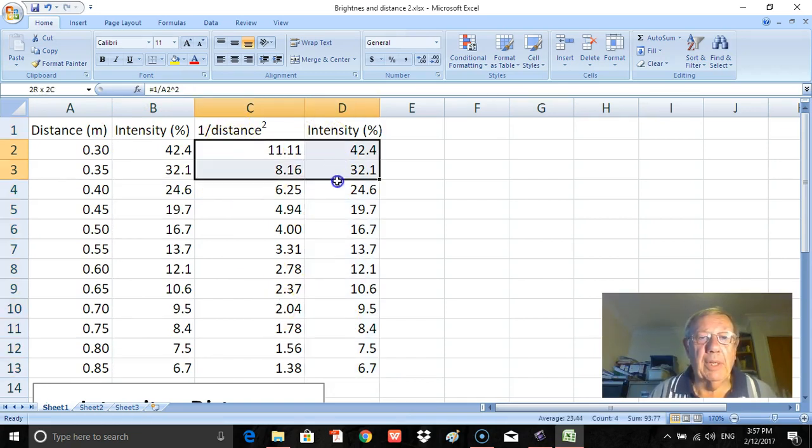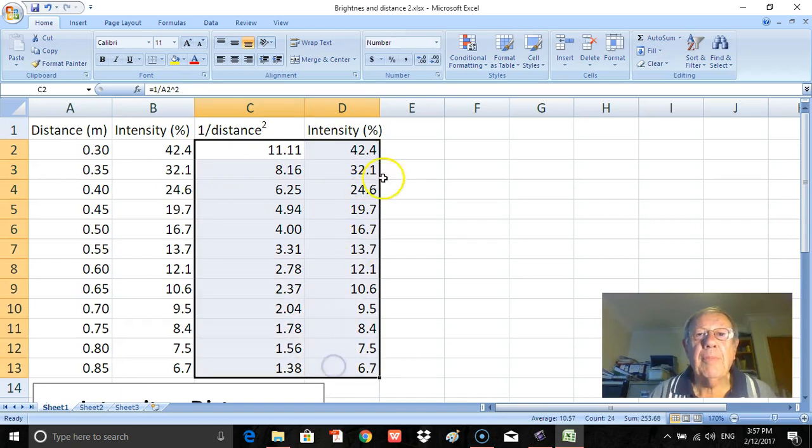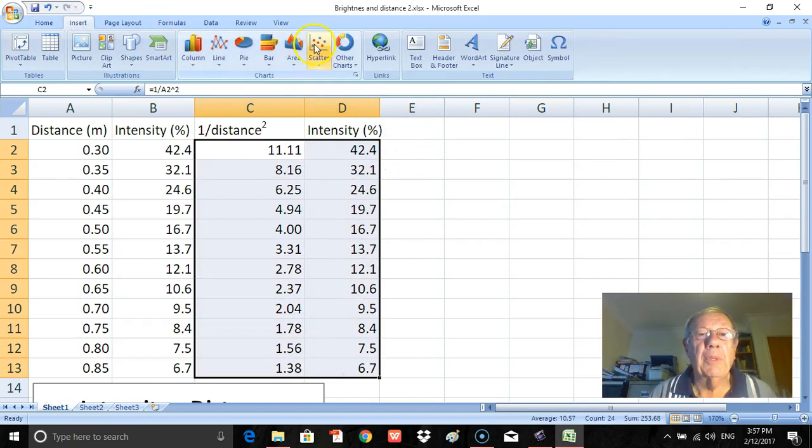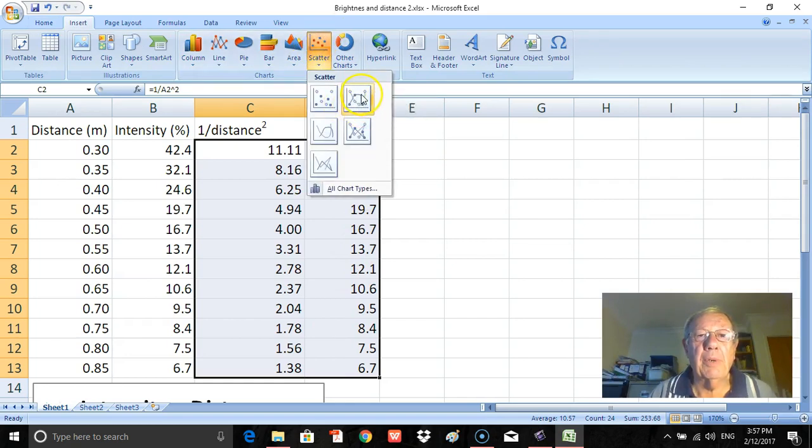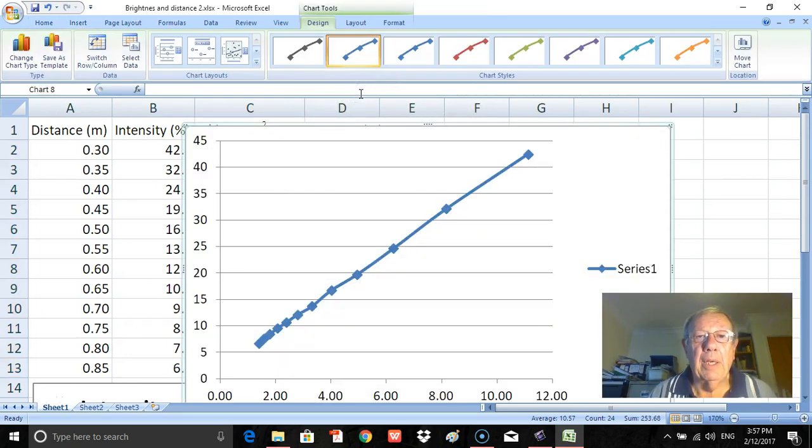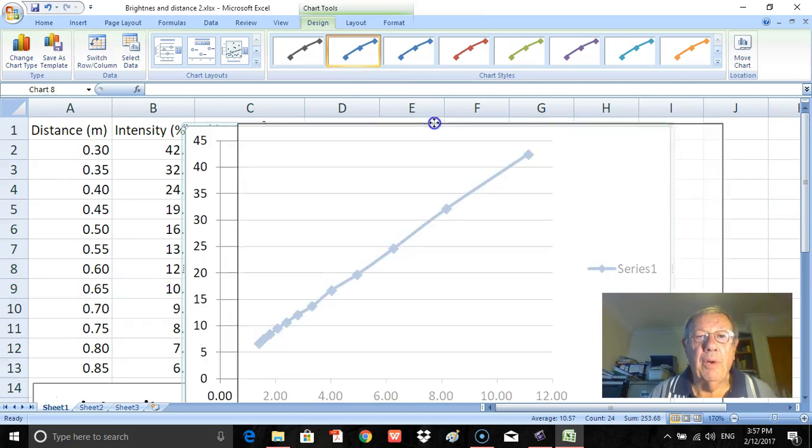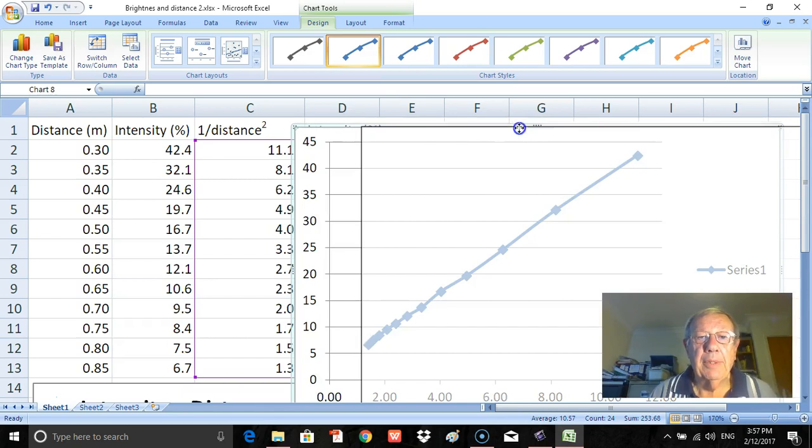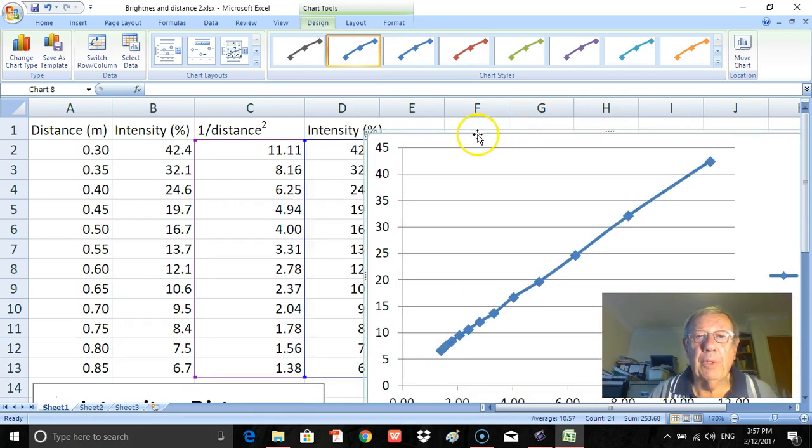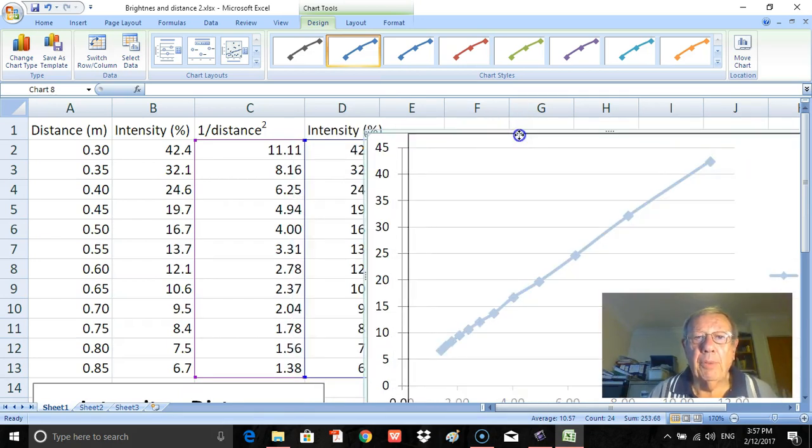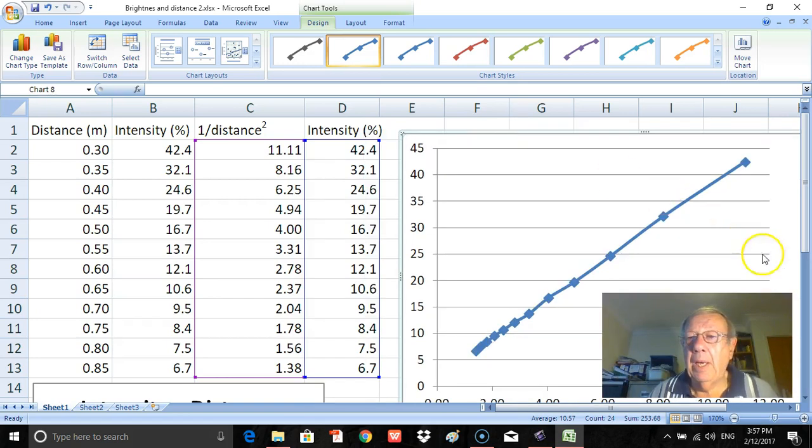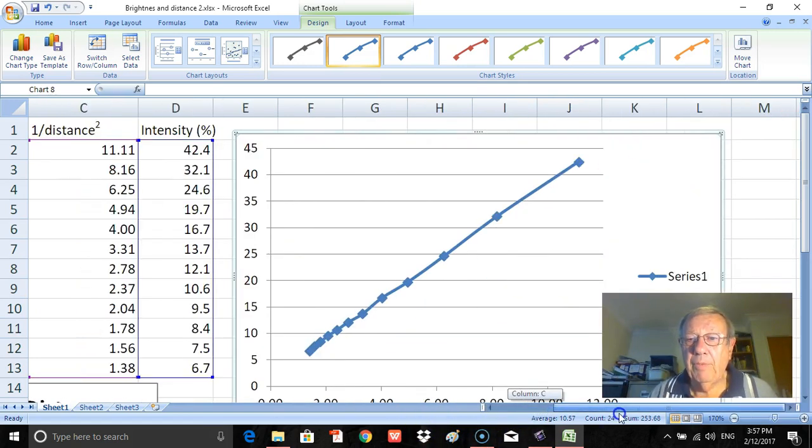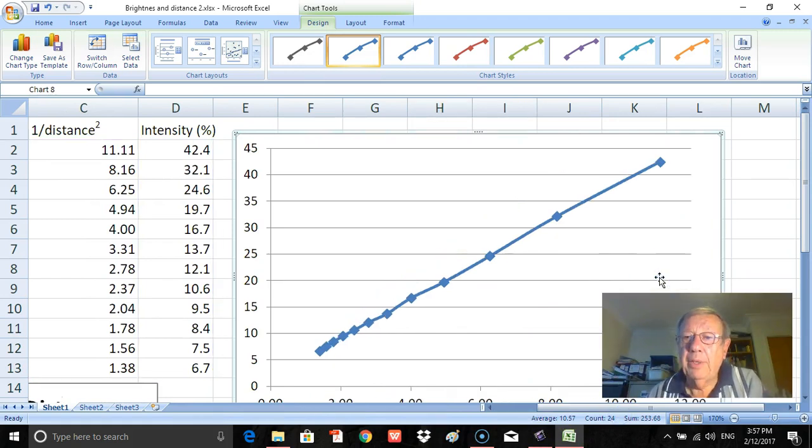So what I need to do is select these cells, go up here to insert. I'm going to insert a scatter graph again. Click here, and there you can see I've got a graph that looks something like a straight line. So that looks all very good. Now I do need to reposition this and to change the size. I'll move this across here. I will delete the legend here. I don't need the legend. I'll just make this a little bit smaller.